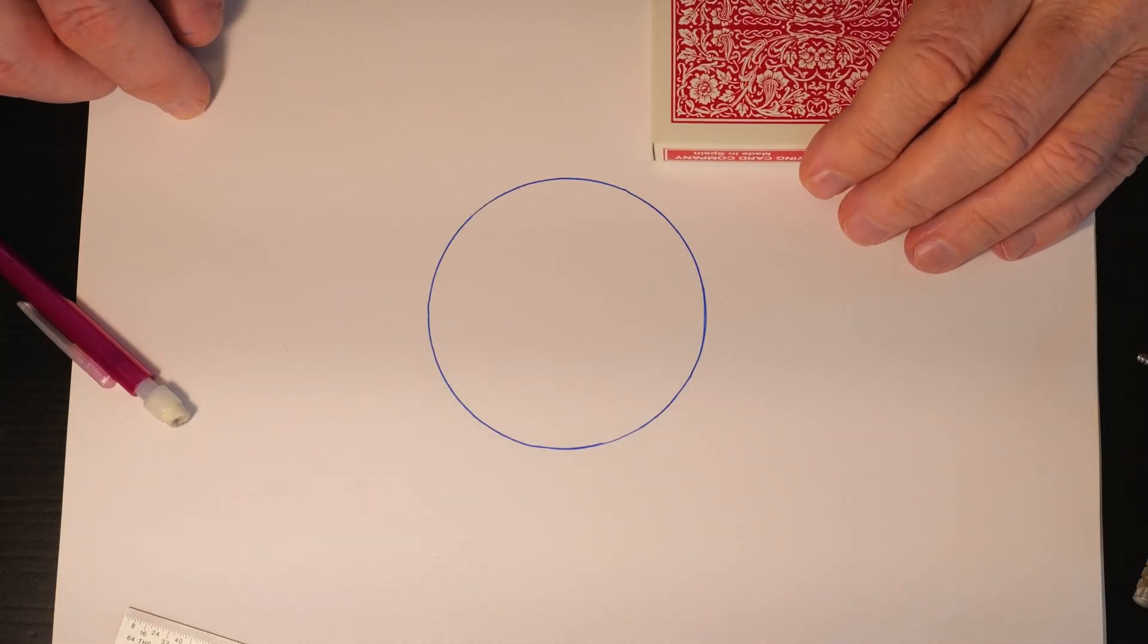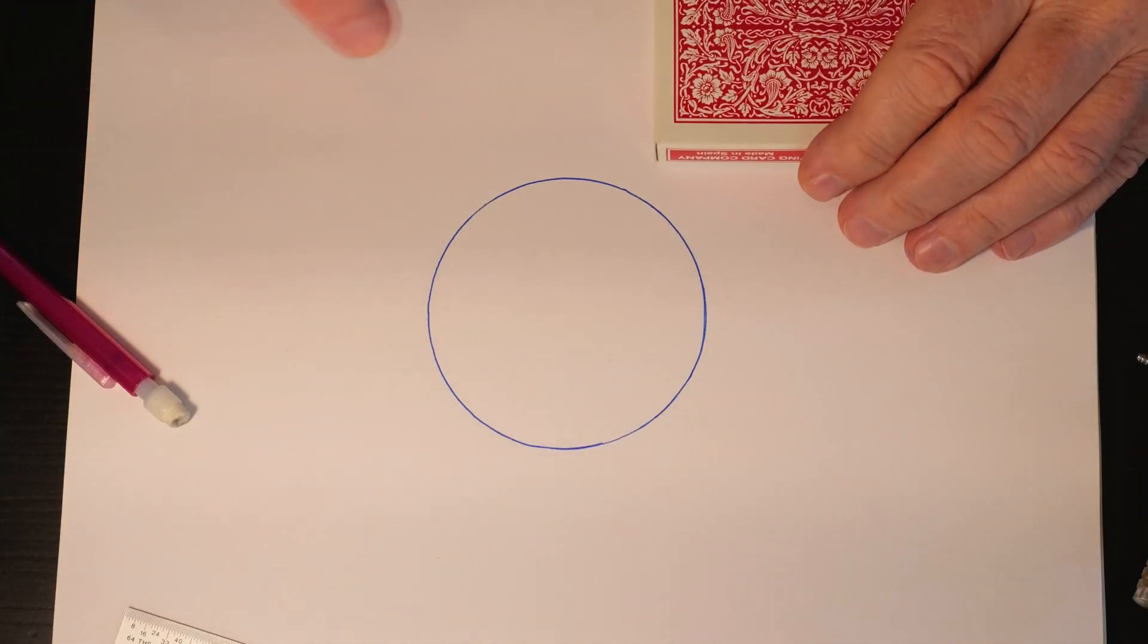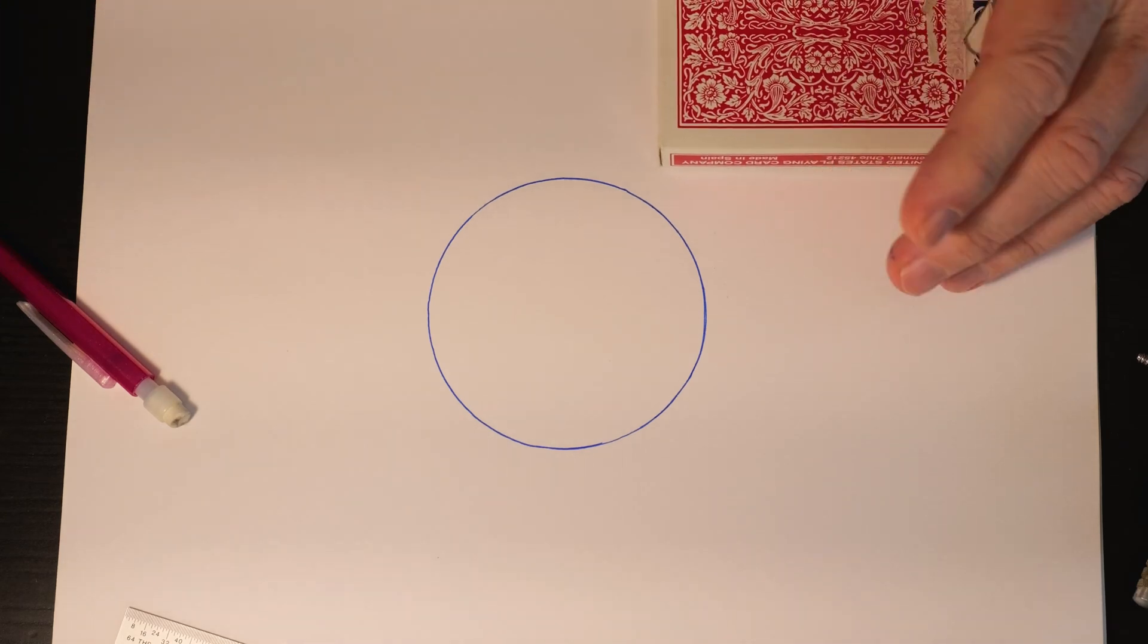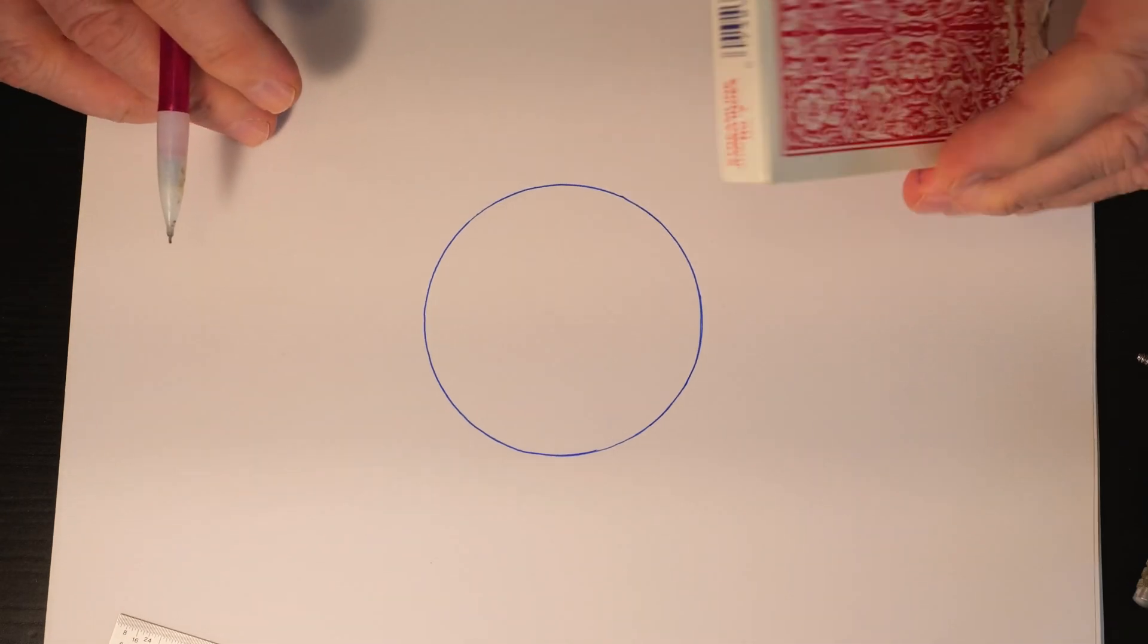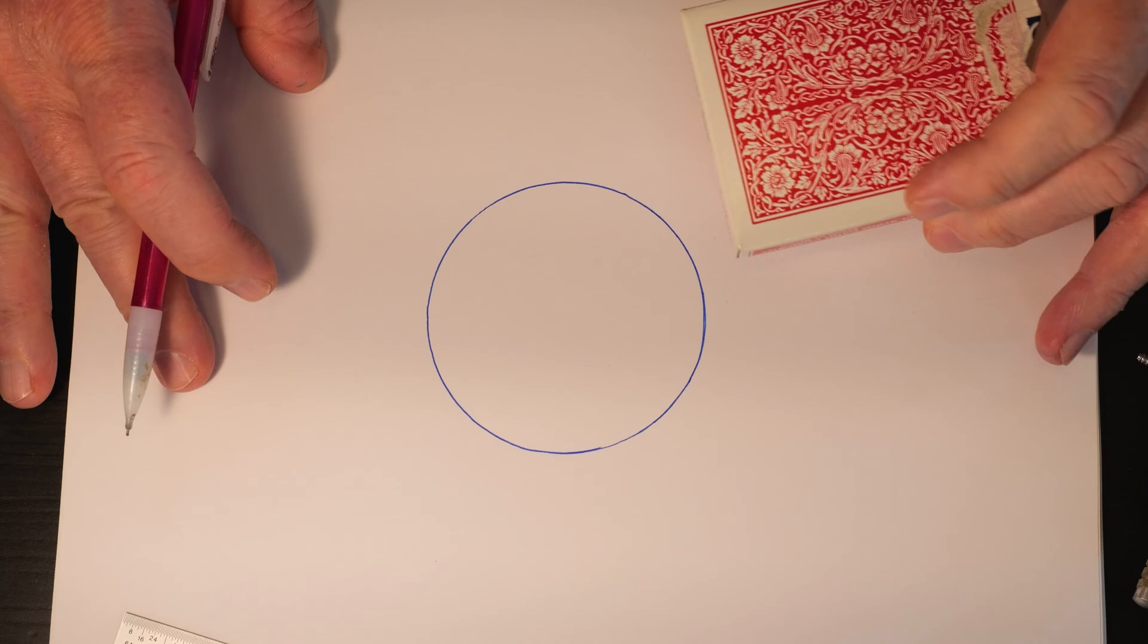Here's how you can find the center of a circle with just a square. Now since I don't have a square with me, I'm just going to use this deck of cards as an illustration.